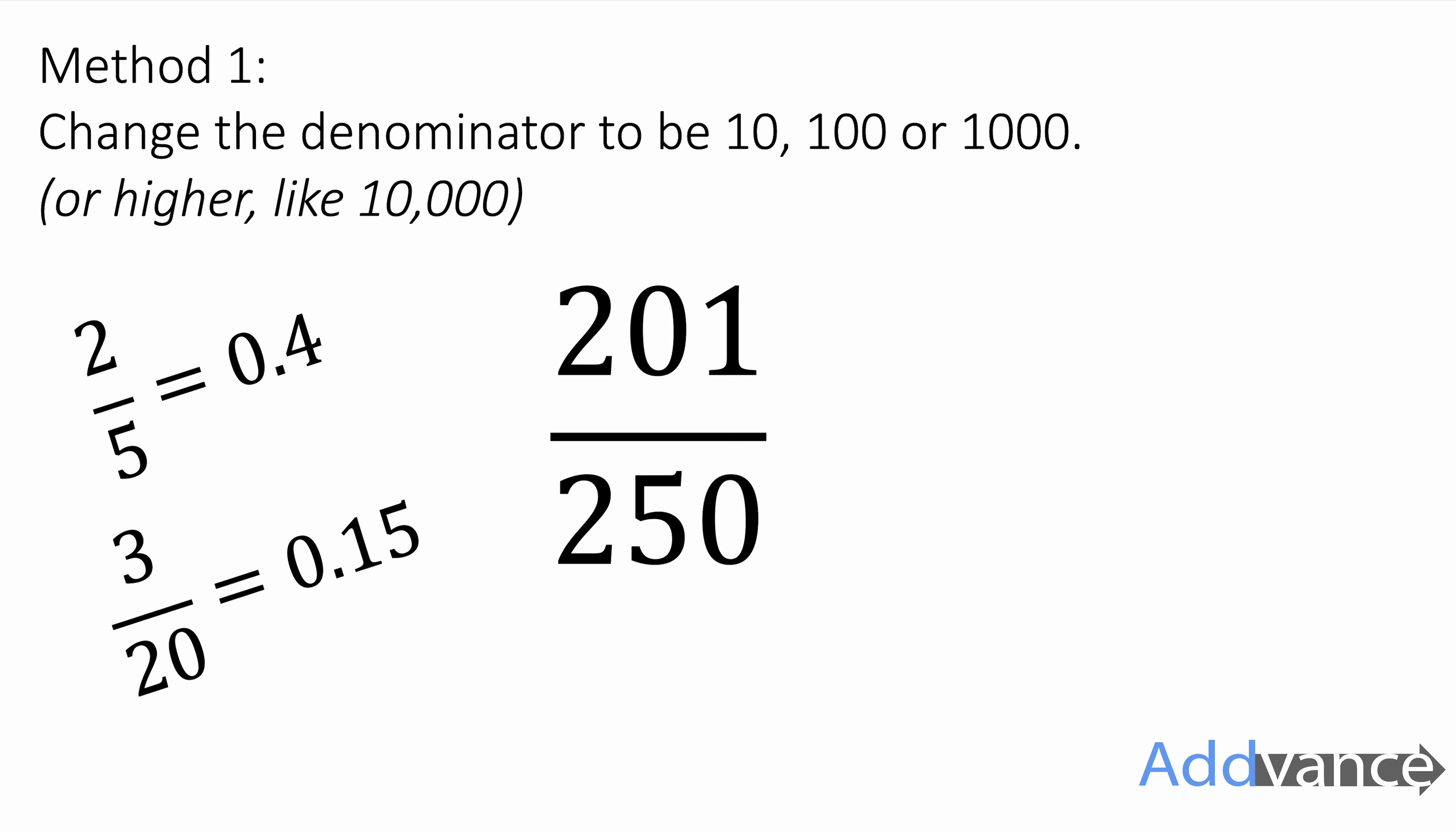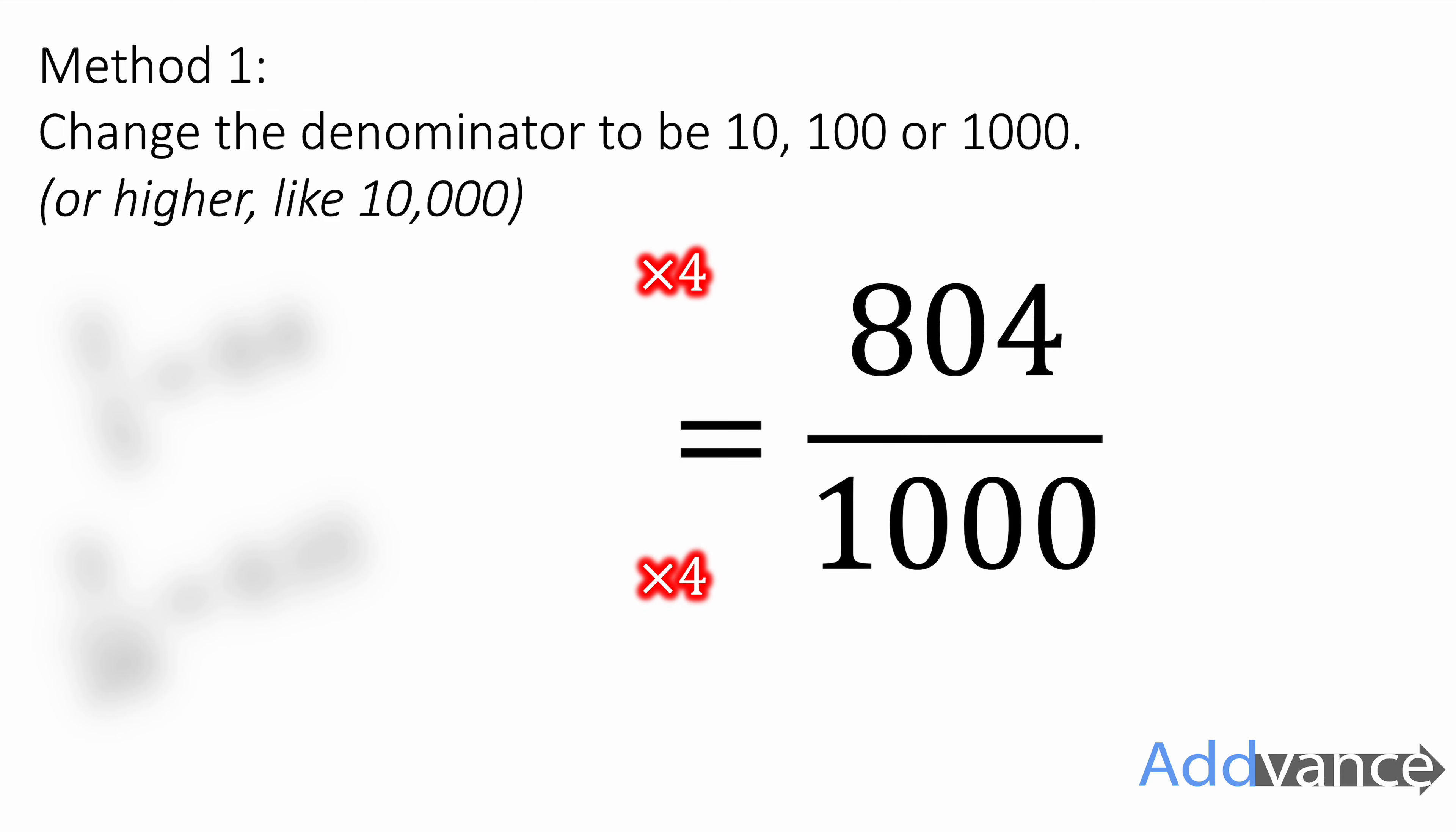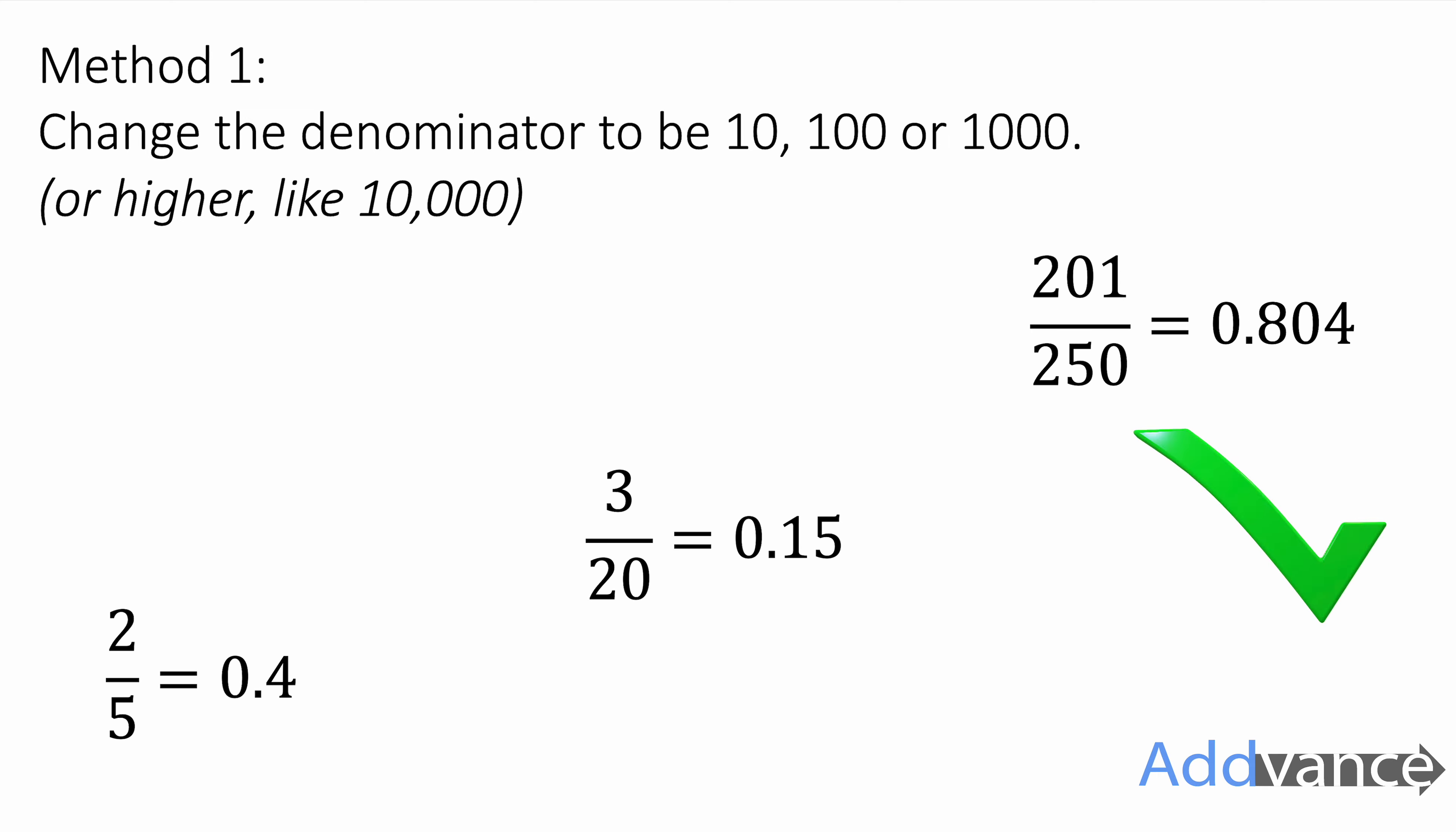Finally, 201 out of 250. Times by 4, times by 4, because that's the way to get thousandths on the denominator. And we get 804 out of 1000, which is the same as 0.804, and we're done.